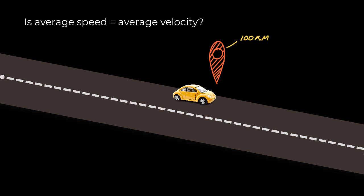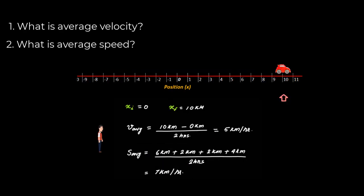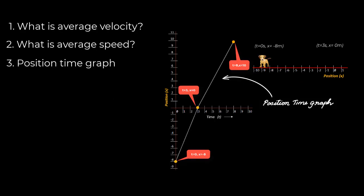Hello everyone, in this lesson we will cover three things. One, what is average velocity? Two, what is average speed? And three, how to find the average velocity using a position-time graph and how to understand different types of position-time graphs.